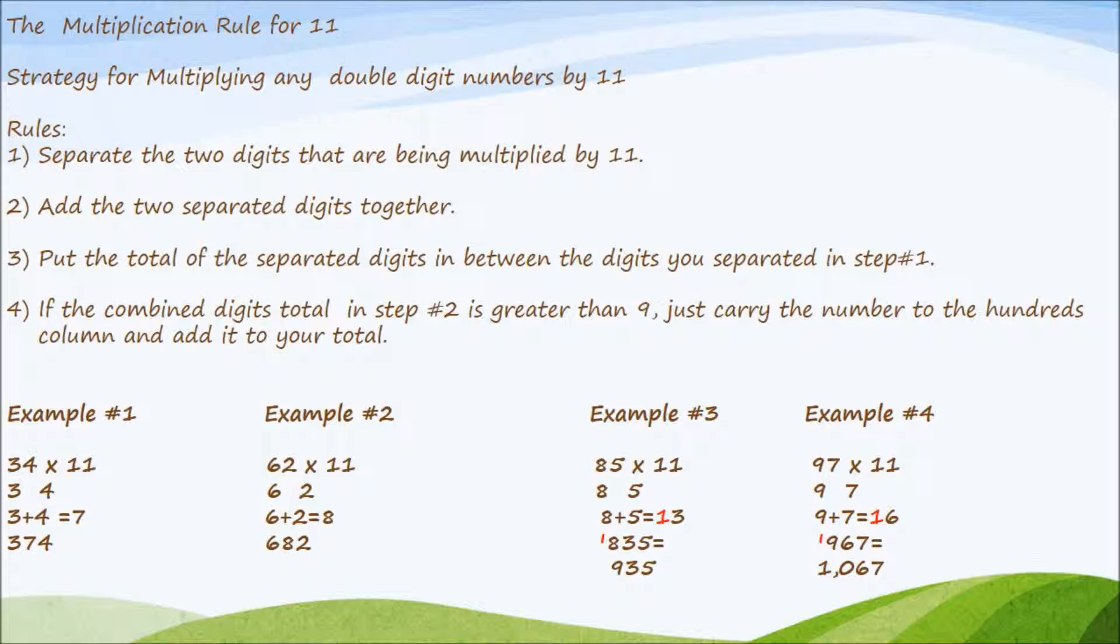Example 2. We have 62 times 11. Let's separate the 6 and the 2. Now let's combine the total of 6 plus 2 which is equal to 8. Now just place the 8 in between the 6 and the 2. Final answer 682.